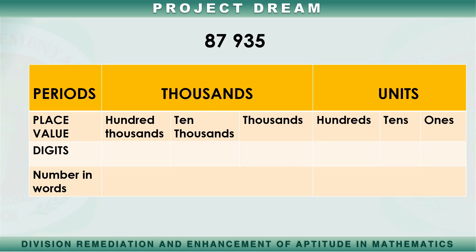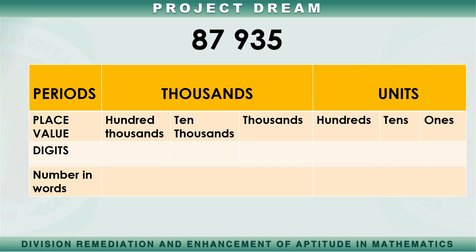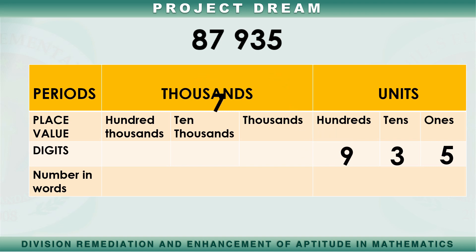Now, we are going to place the digits of 87,935 in each corresponding place: 5 in ones place, 3 in tens place, 9 in hundreds place, 7 in thousands place, and 8 in tens thousands place.